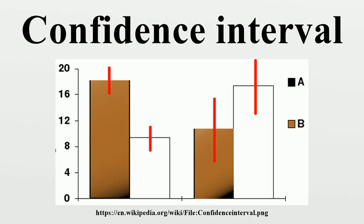The explanation of a confidence interval can amount to something like: the confidence interval represents values for the population parameter for which the difference between the parameter and the observed estimate is not statistically significant at the 10% level. This relates to one particular way in which a confidence interval may be constructed. If the true value of the parameter lies outside the 90% confidence interval once it has been calculated, then an event has occurred which had a probability of 10% of happening by chance.